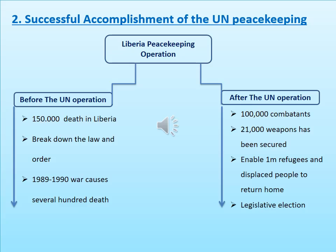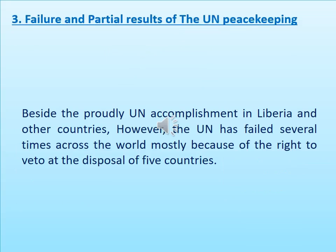The UN also enabled 1 million refugees and displaced people to return home, bringing them back to safe conditions. And after the people were safe and the country gained stability, the UN also arranged the legislative election.